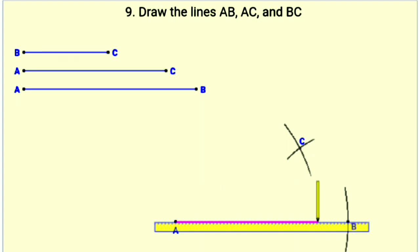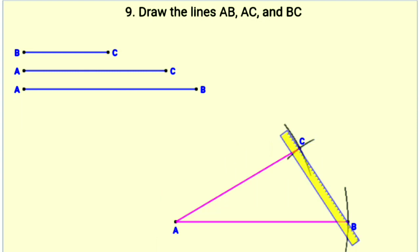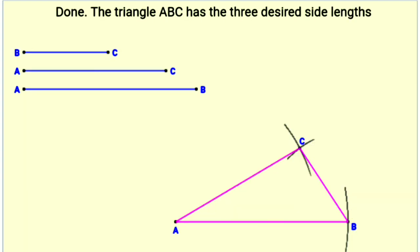Draw the lines AB, AC, and BC. The required triangle ABC with the desired side lengths is now ready.